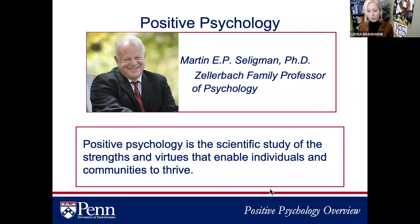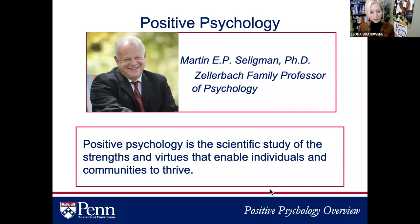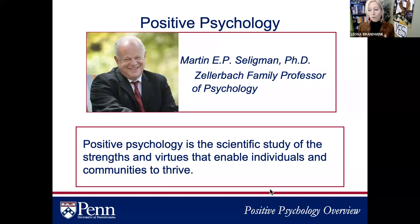Seligman proposed the field of positive psychology. With his colleague Mihaly Csikszentmihalyi, in the year 2000 they co-authored a seminal article in American Psychologist, suggesting that positive psychology should study not only the states and emotions we feel when experiencing flourishing, but also the traits and character strengths that help produce that, and the institutions that help create the conditions of flourishing. From that time, it created a tsunami of continued studies.